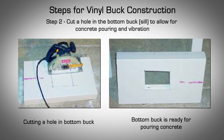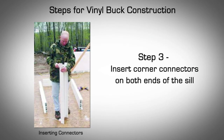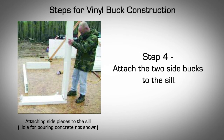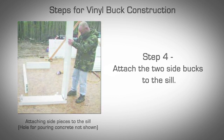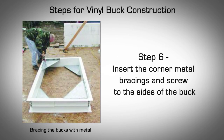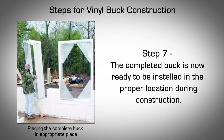Cut a hole in the bottom buck, known as the sill, to allow for concrete pouring and vibration. Insert corner connectors on both ends of the sill. Attach the two side bucks to the sill. Insert the final corner connectors to the two side bucks and install the window or door header piece in place. Insert the corner metal bracings and screw to the sides of the buck. The completed buck is now ready to be installed in the proper location during construction.